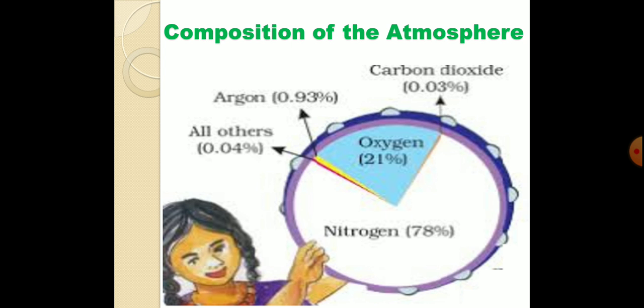Let's see the composition of the atmosphere. Nitrogen is the most plentiful gas at 78%. The second most plentiful gas is oxygen at 21%, which is used for breathing. Then comes argon at 0.93%, carbon dioxide at 0.03%, and all other gases including dust particles at 0.04%.